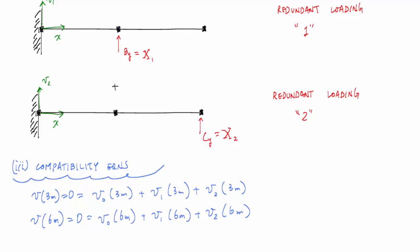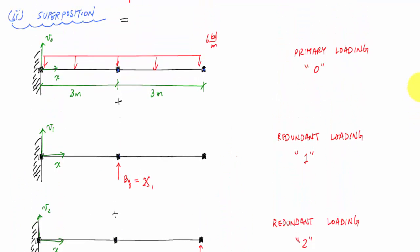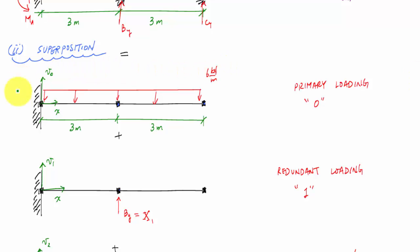Now I just need to calculate displacements for my compatibility equation so I can plug and chug and solve for unknowns. The first structure I'm going to look at is the primary loading structure — a statically determinate cantilever beam with a uniformly distributed load. I need to calculate the displacements v₀ at three meters and v₀ at six meters, at the middle and at the end of the cantilever beam.